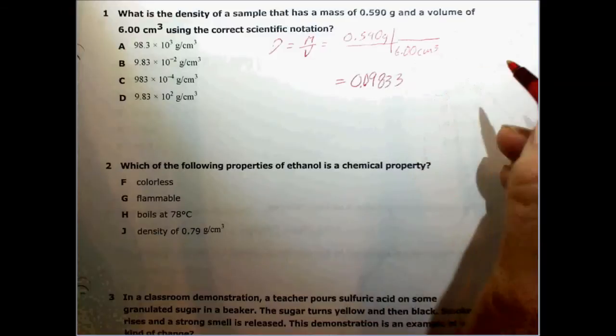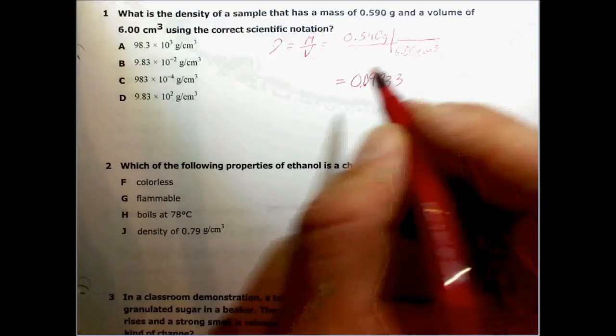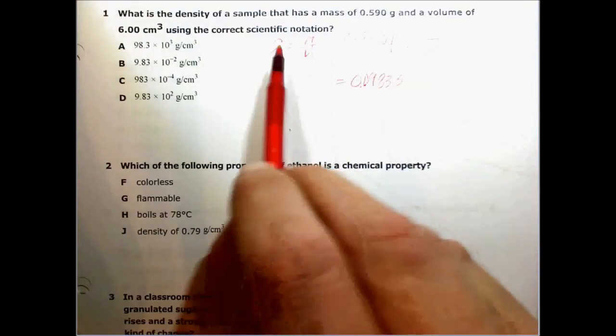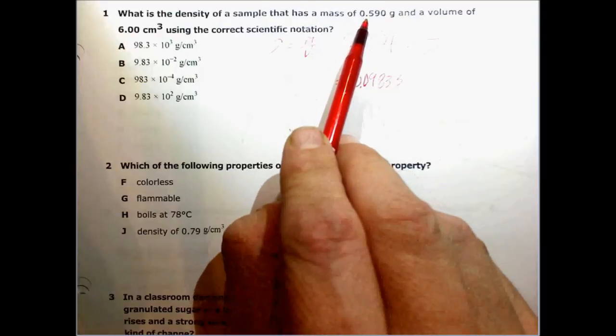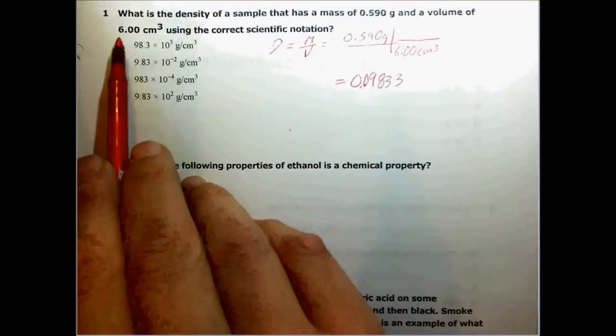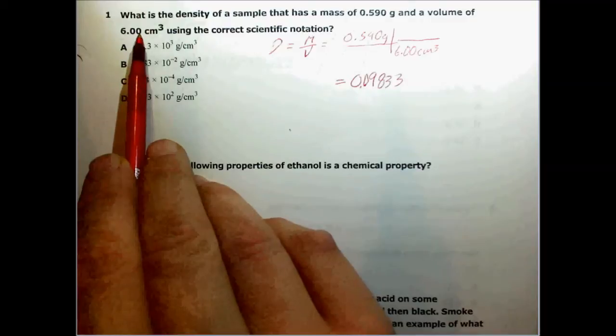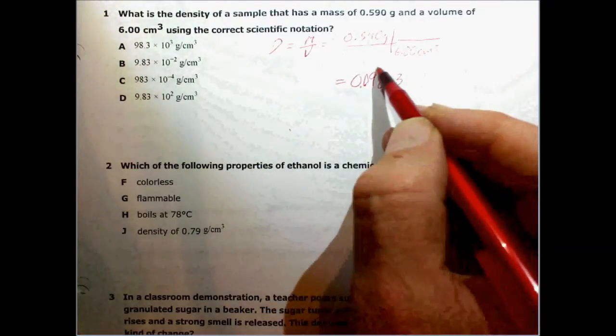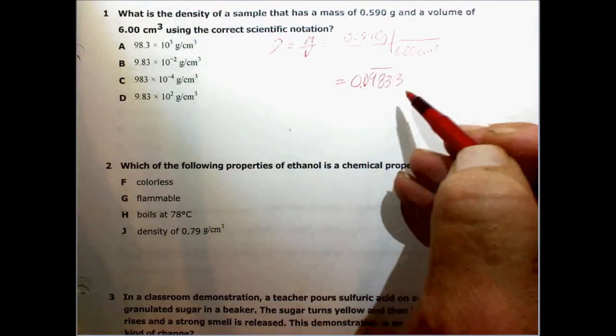The question says use correct scientific notation. So the first thing we have to do is look at how many significant figures we have. We have three significant figures here and three significant figures here. So we'll need to have three significant figures in our answer. That will be these three right here.